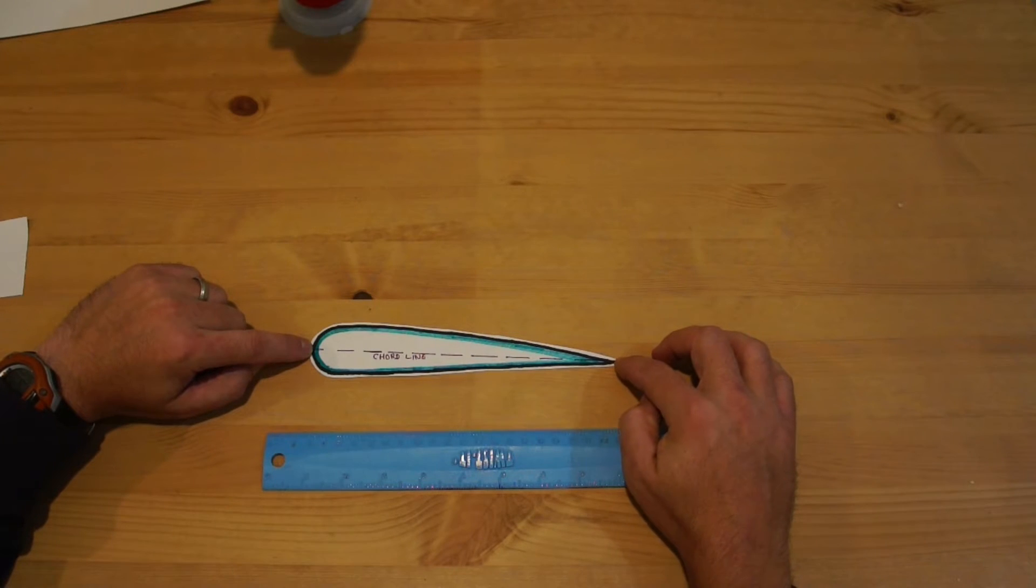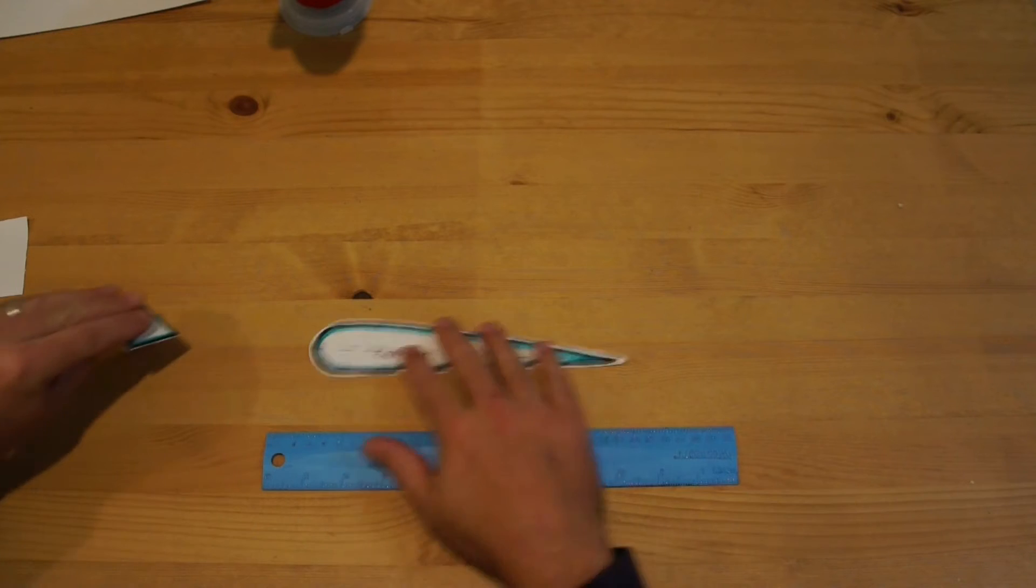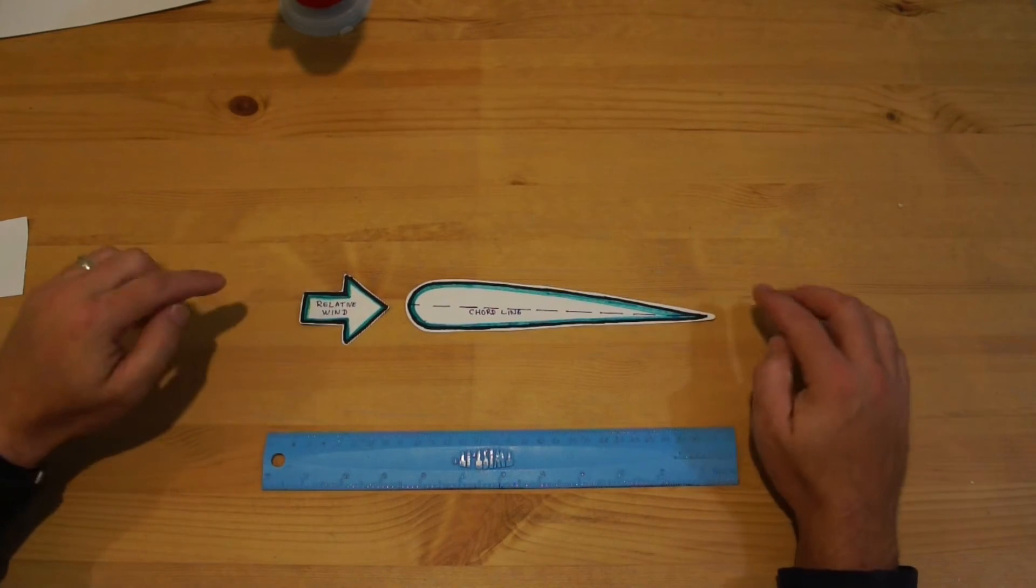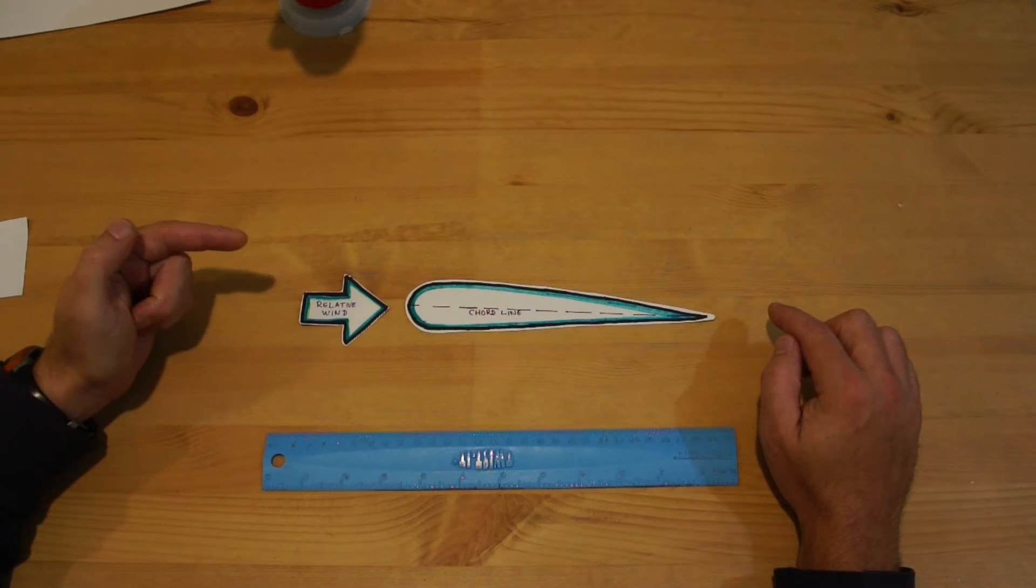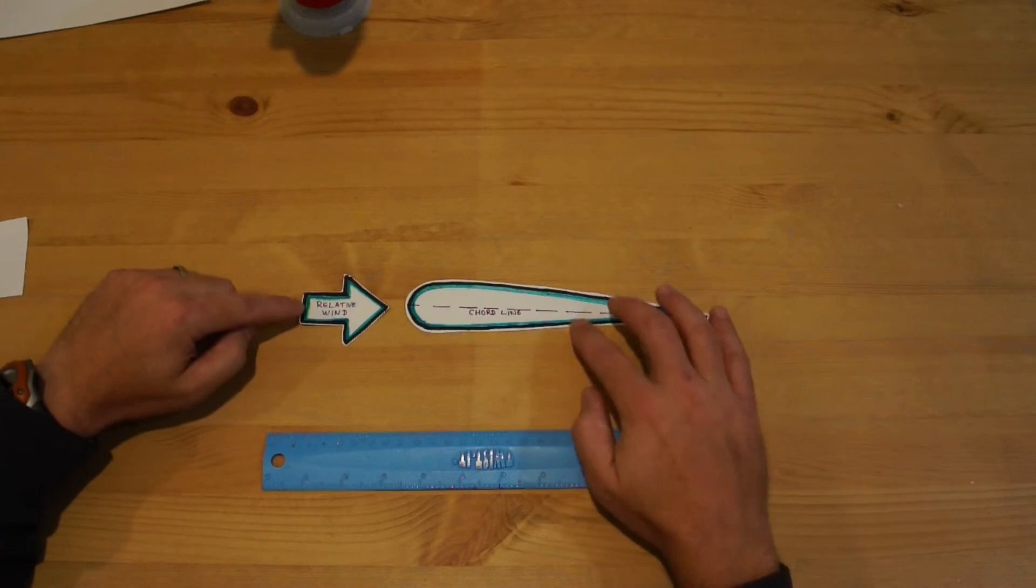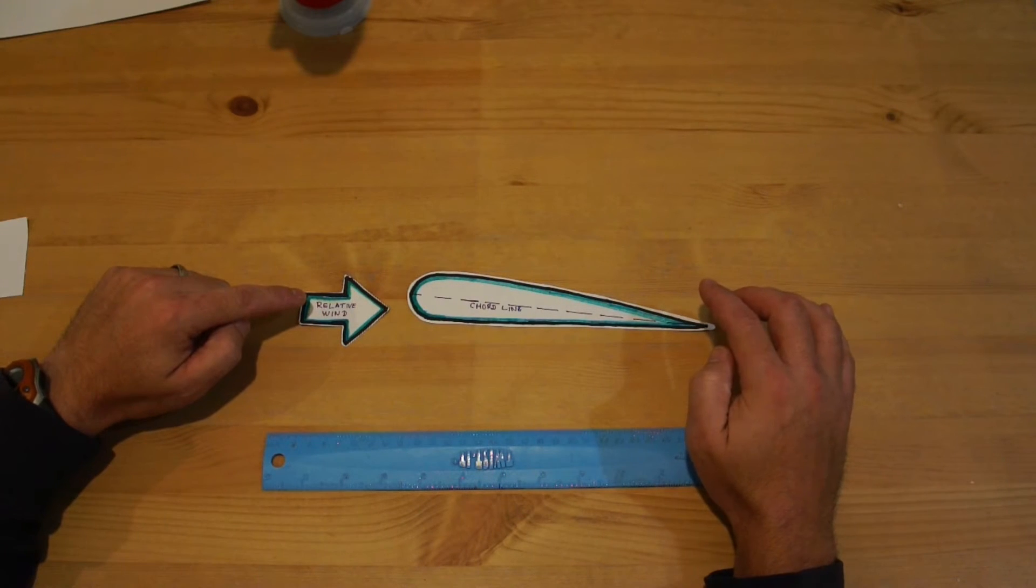The cord line is important because that is what you measure your angle of attack by. If we're flying along straight and level in the air, the relative wind is going to be hitting that cord line basically straight on. Depending on how fast you're going, the shape of your wing, how much weight your aircraft is carrying, that angle might have to be adjusted slightly.